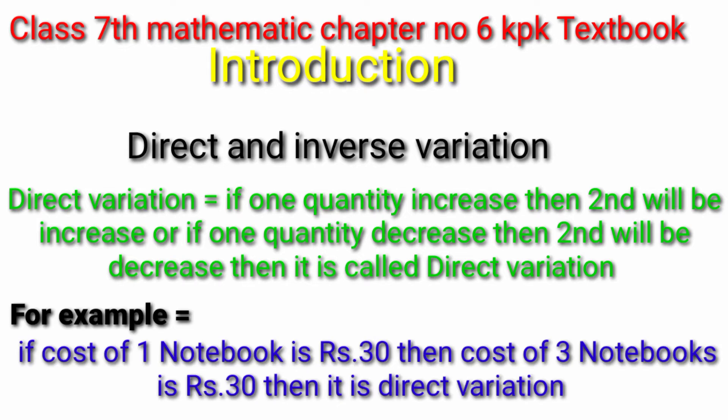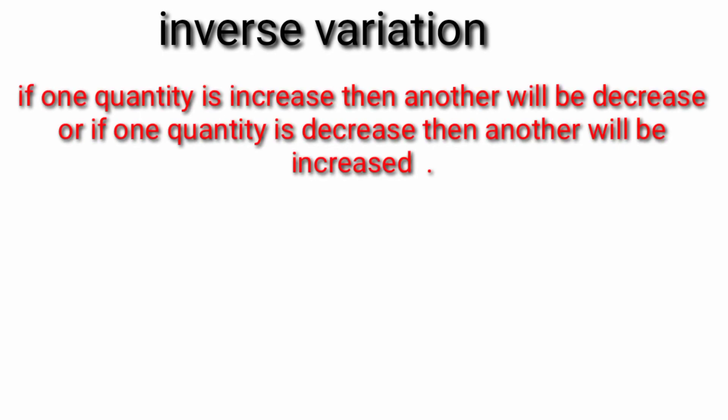For example, if cost of one notebook is Rs. 30 then the cost of three notebooks is Rs. 90, then it is direct variation. And inverse variation: if one quantity increase then another will be decrease. If one quantity decrease then another will be increase. It is also called inverse variation.